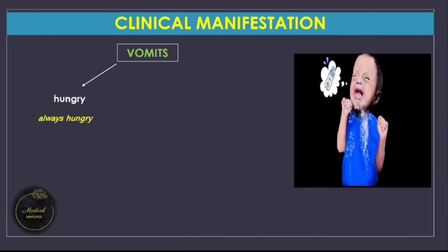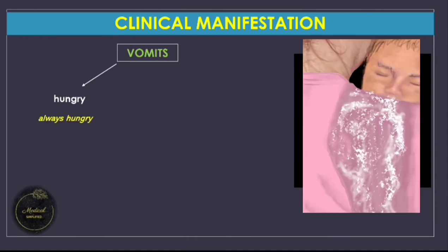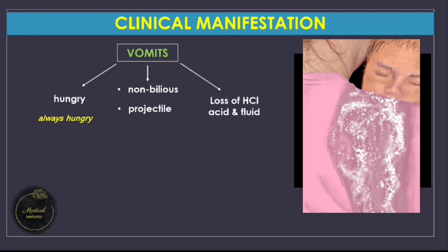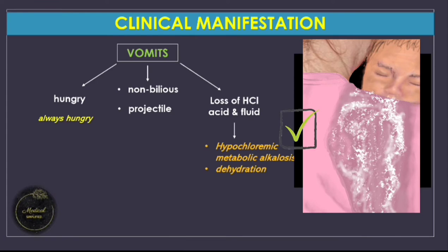Since the site of obstruction is before the duodenum, the vomitus will be non-bilious. Due to increased pressure, it may be projectile. As fluid and feed loss is from the stomach, it leads to loss of hydrochloric acid — loss of hydrogen and chloride ions — causing hypochloremic hypokalemic metabolic alkalosis. These are very frequently asked questions at all levels.